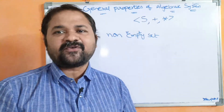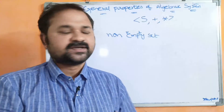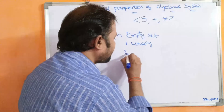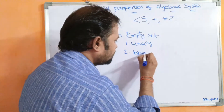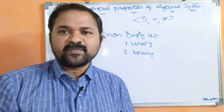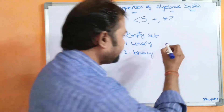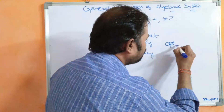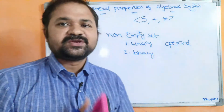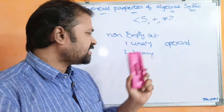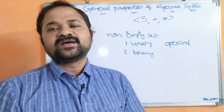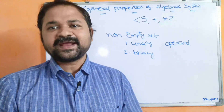Mainly we perform two types of operations. The first one is unary operation, and the second one is binary operation. Unary operation means performing an operation on only one operand. We have two types of unary operators: unary plus and unary minus. Binary operations include plus, minus, star, multiplication — all those are binary operators.